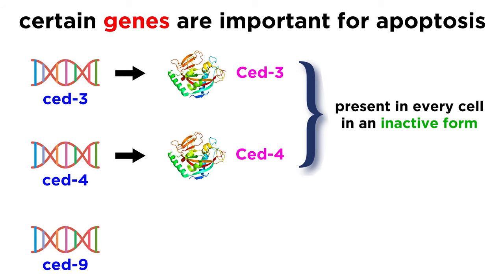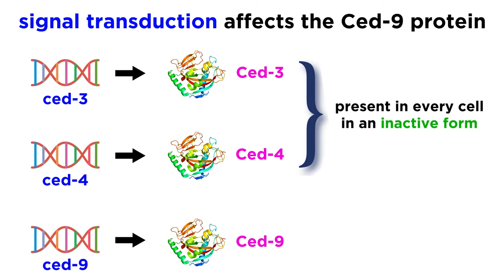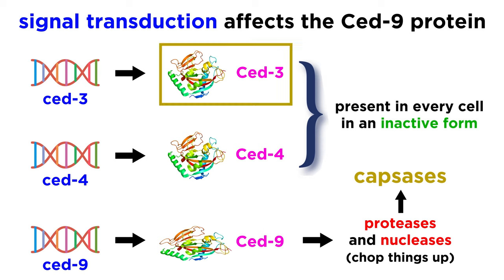In addition, the gene CED9 produces the protein CED9, which sits in the outer mitochondrial membrane and acts as a brake that regulates apoptosis. If the signal to undergo apoptosis is received by the cell, signal transduction results in a conformational change in CED9 that renders it unable to halt apoptosis, in turn resulting in the production of proteases and nucleases, which are enzymes that chop proteins and DNA. These proteases are called caspases, and the main one in C. elegans is the CED3 protein we mentioned earlier.